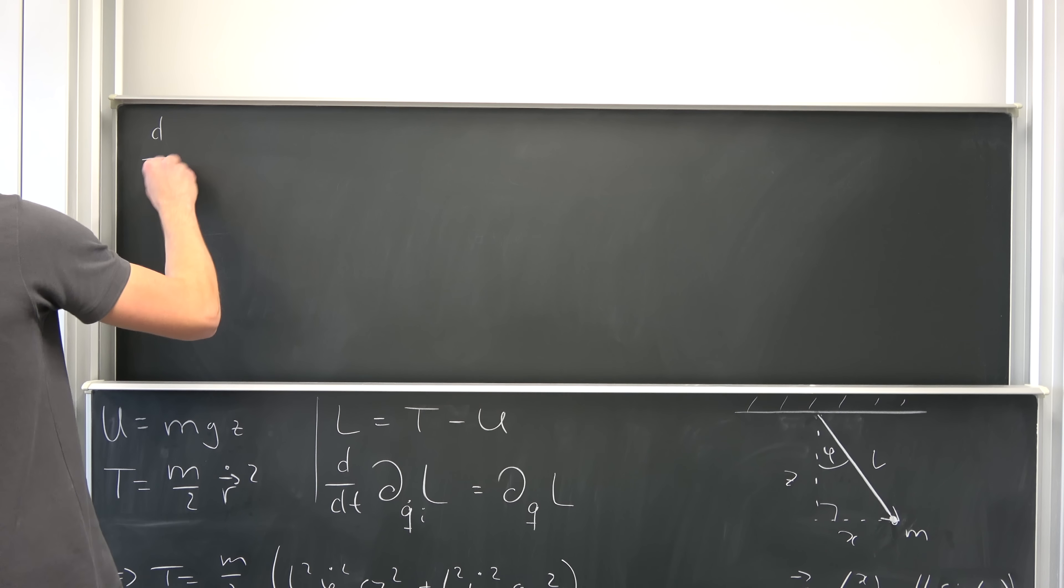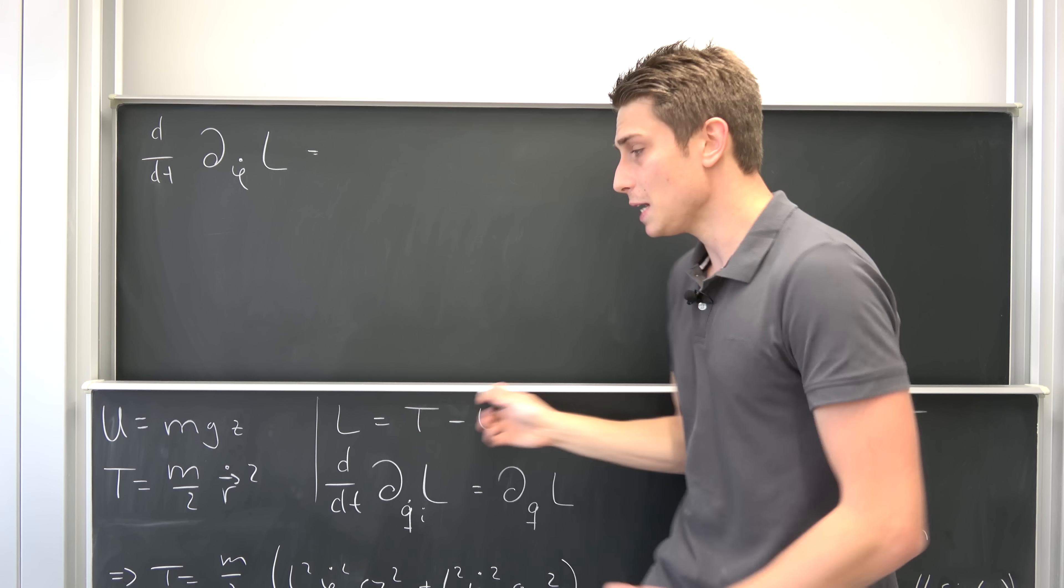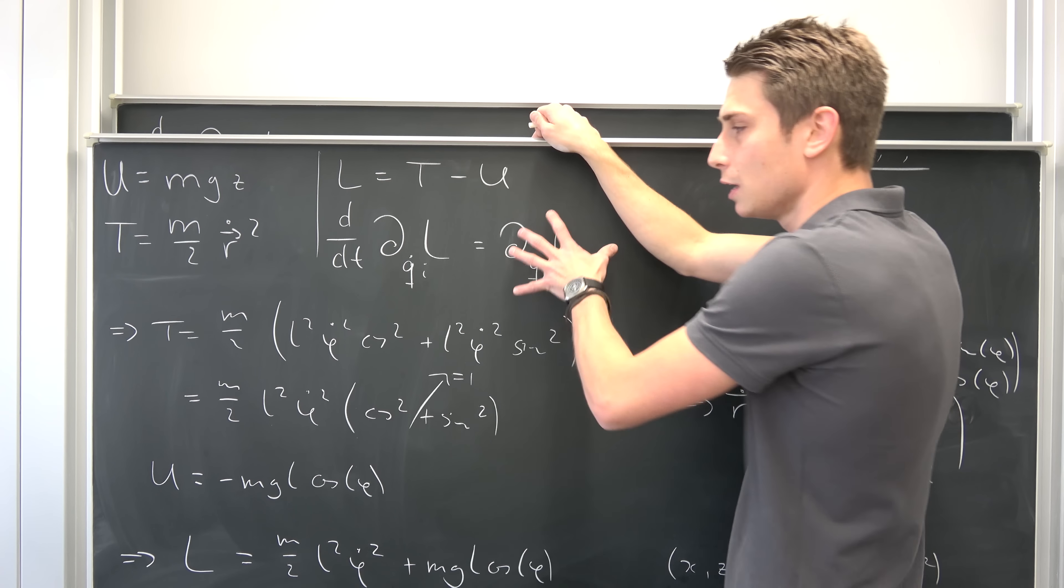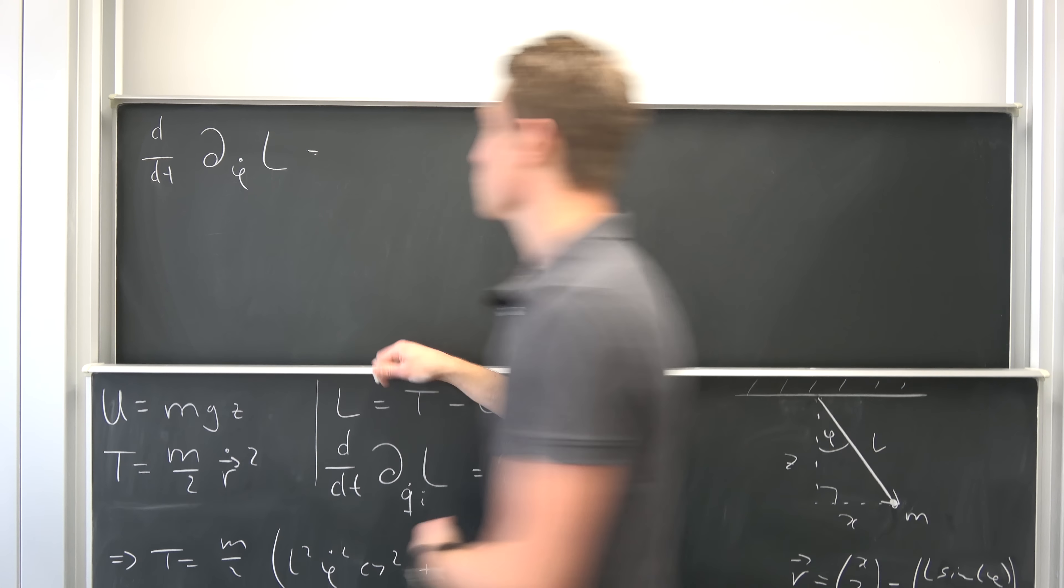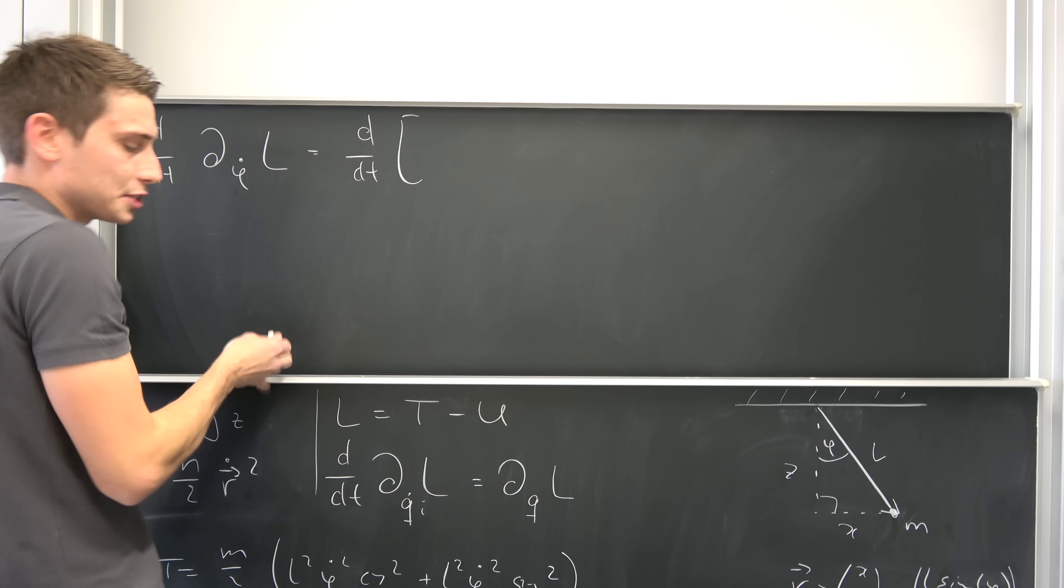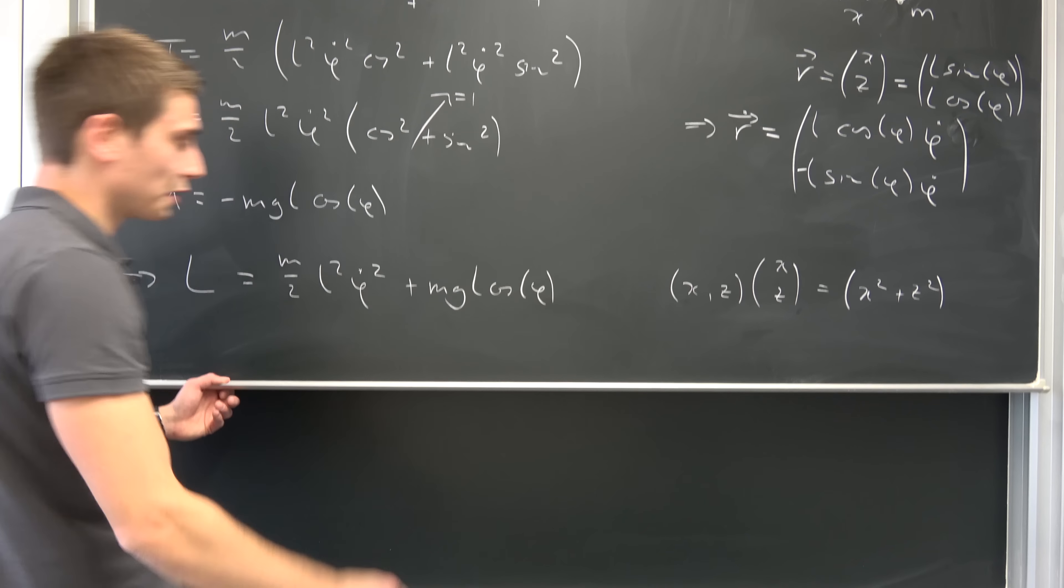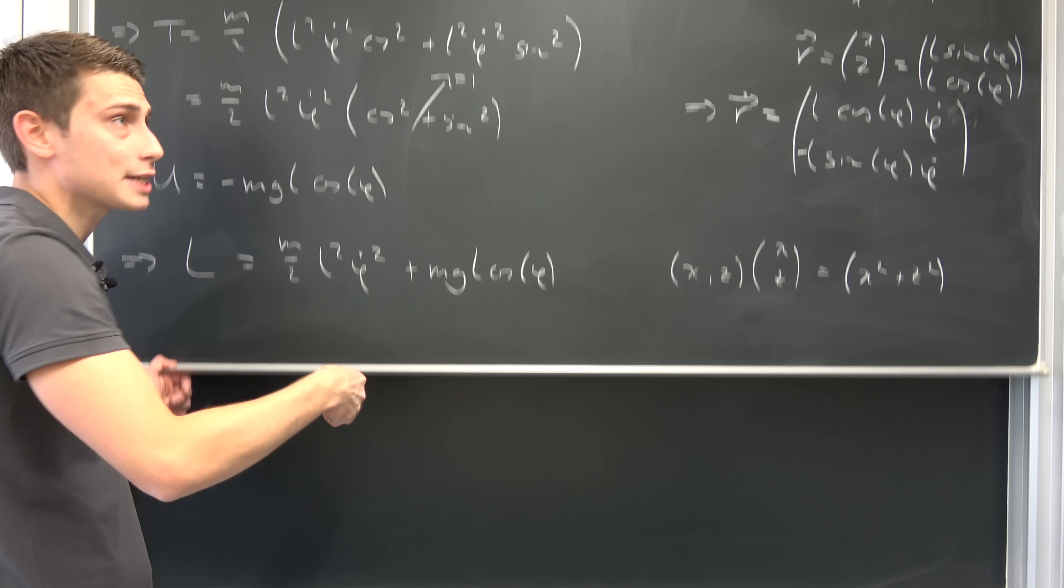So we have D DT of Del phi dot L. And in the system you can have many, many, many constraints depending on many angles for example. That's why we have this qi right here. So you have to use the Euler-Lagrange equation on all the constraints you have in your system. So this right here is now nothing but D DT of Del phi dot L. The second part is independent of phi dot. It doesn't matter. It's just dependent on phi. So we are differentiating this right here, so extracting the 2 down, so we have M times L squared times phi dot.